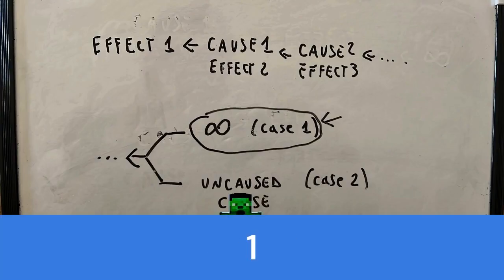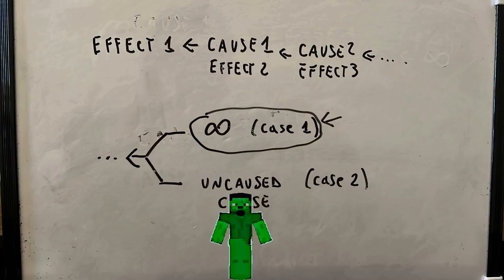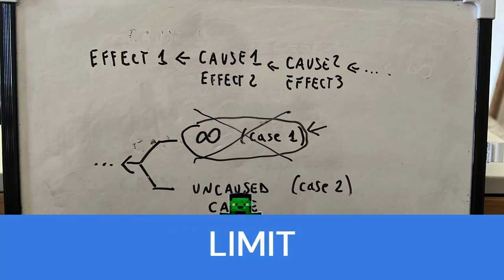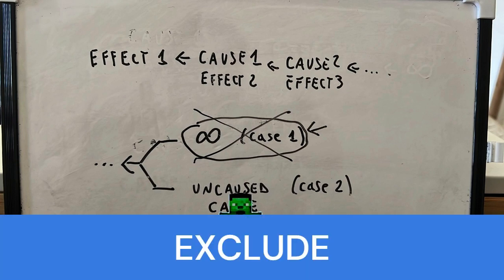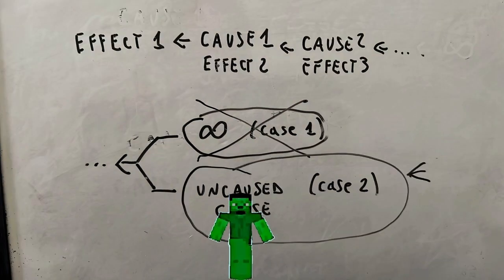In case one, we have seen that the concept of infinity does not apply to physical reality. Everything has a physical limit. For this reason, we can reasonably exclude this case. In case two, we have an uncaused cause. That is something that is the cause of itself.